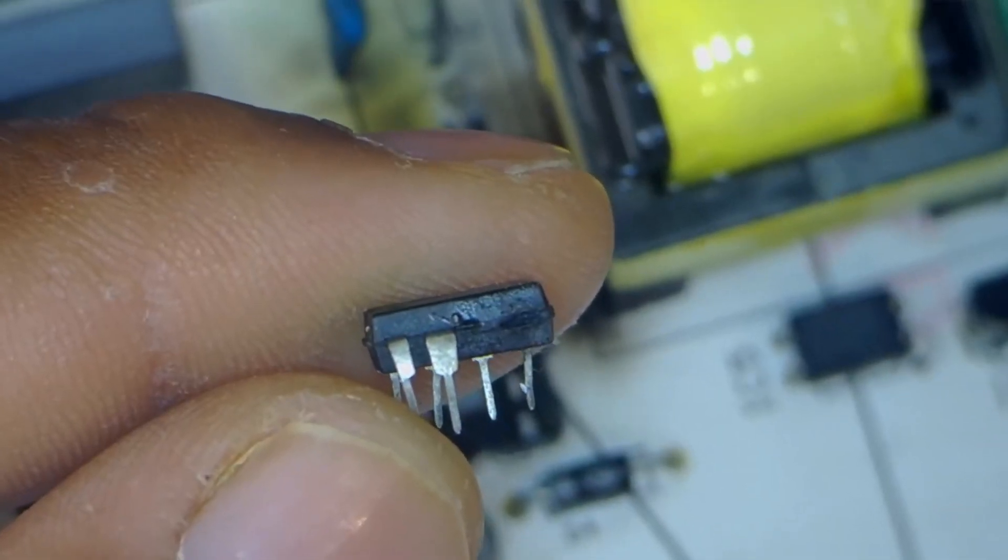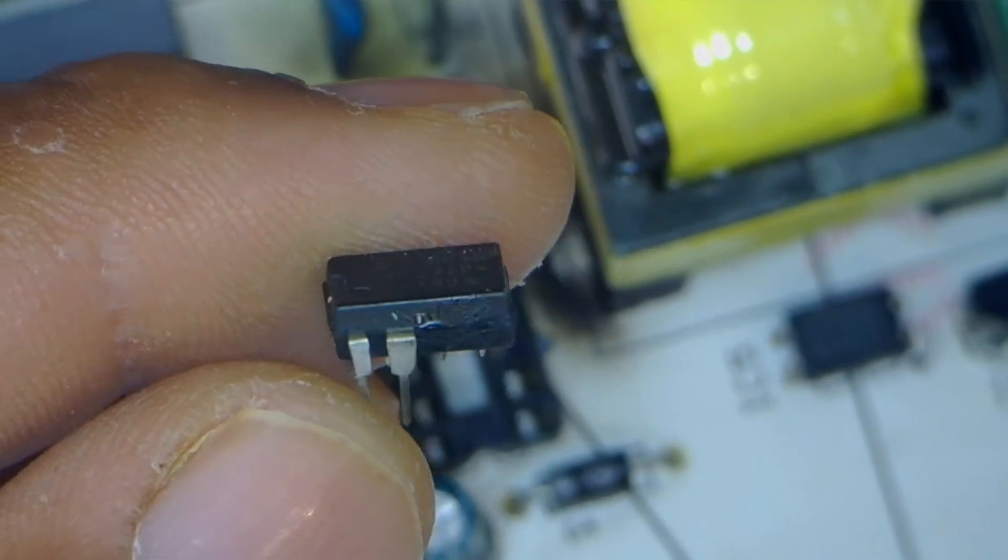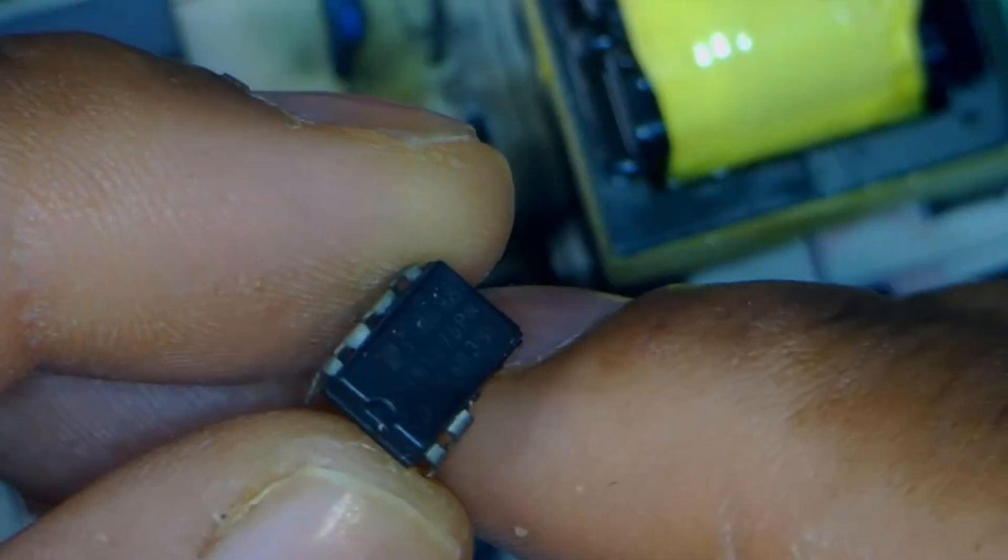You can see that this IC has burned from this spot, and one of its legs has burned, which caused this issue. Now, let's check its number to identify it. It's a TNY276PN. We'll clean this area a bit.